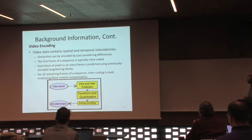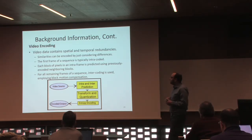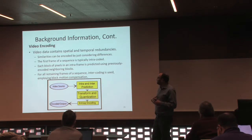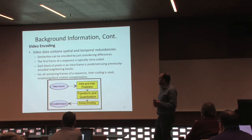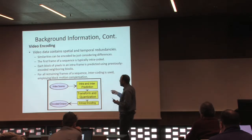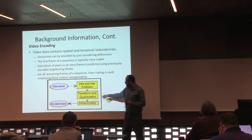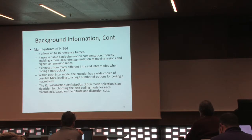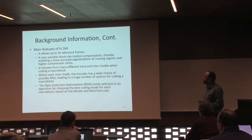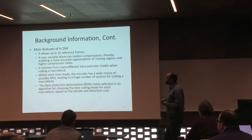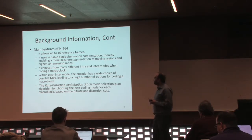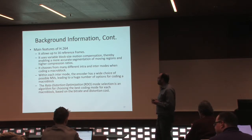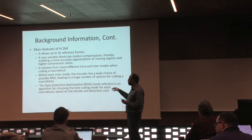For video encoding, video data has so much redundancy, both spatial and temporal. X264 allows up to 16 reference frames to be considered; it uses variable block size which makes it more complex. Within each inter-mode, the encoder has a wide choice of possible motion vectors, and rate distortion optimization mode selection is used to find the best coding mode for each macro block.